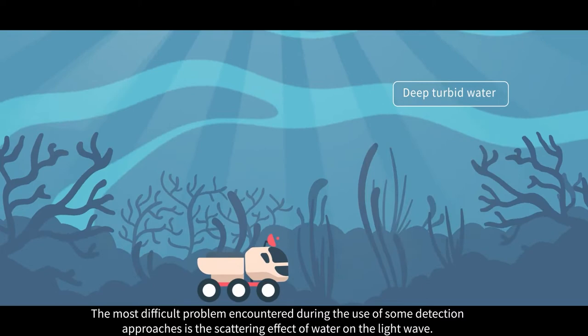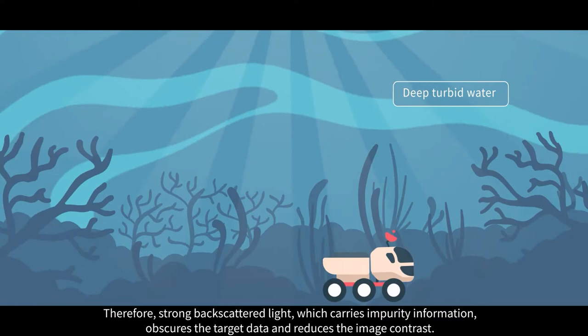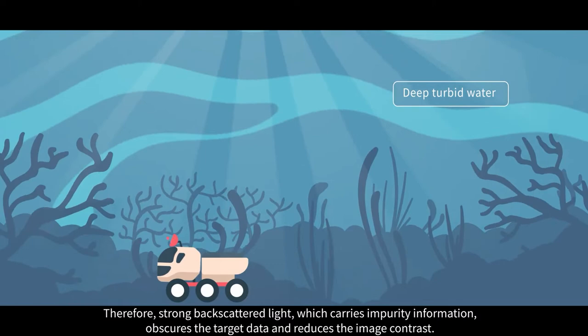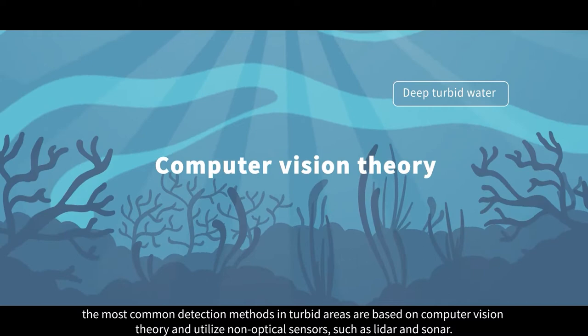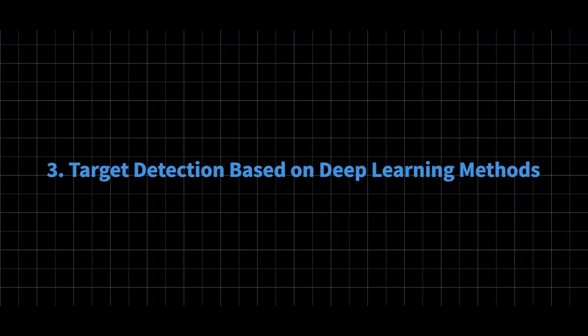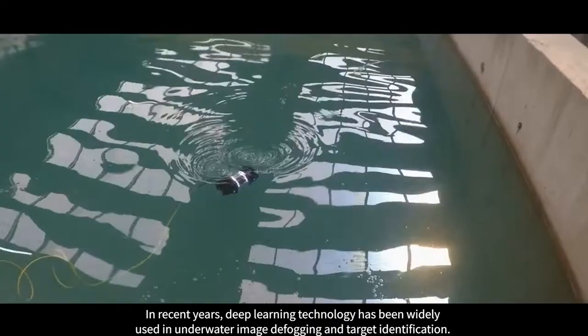The most difficult problem encountered during the use of some detection approaches is the scattering effect of water on the light wave. Therefore, strong back-scattered light, which carries impurity information, obscures the target data and reduces the image contrast. Considering the objective limitations of optical sensors in underwater scenes, the most common detection methods in turbid areas are based on computer vision theory and utilize non-optical sensors, such as LiDAR and sonar.